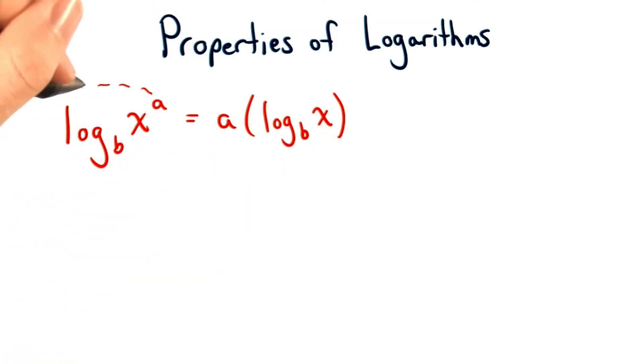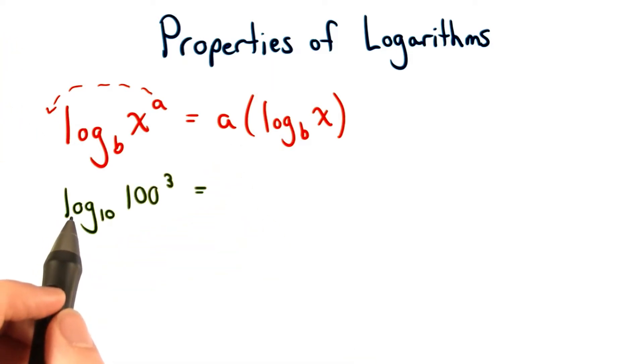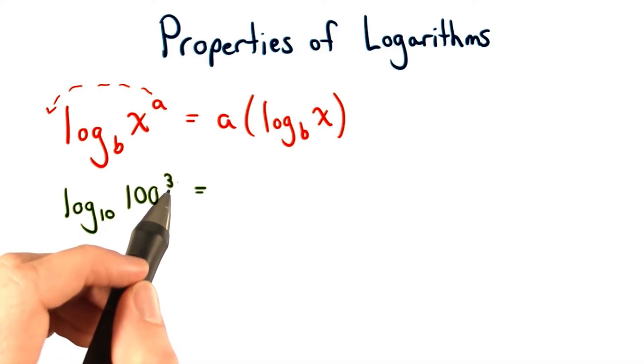In other words, we just take this exponent of a and bring it down in front of our logarithm as a coefficient. If I had log base 10 of 100 to the third power,